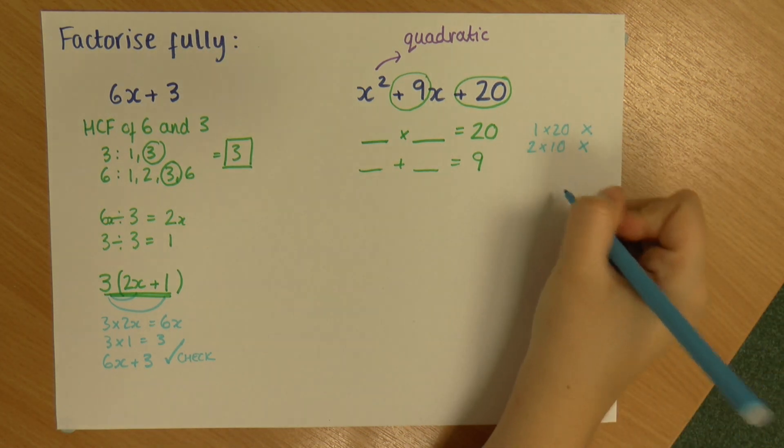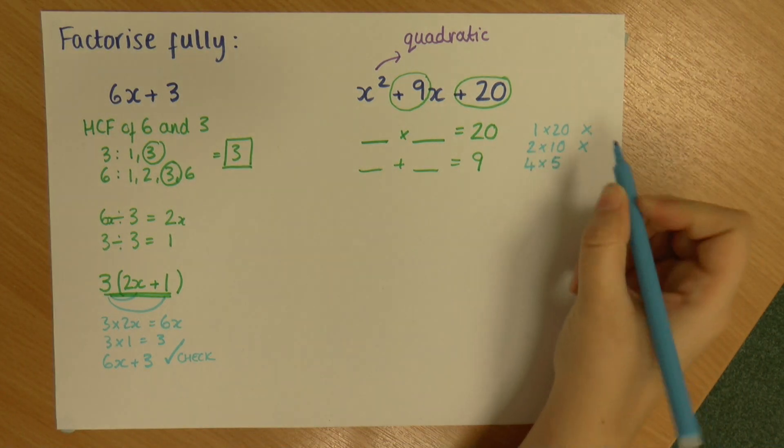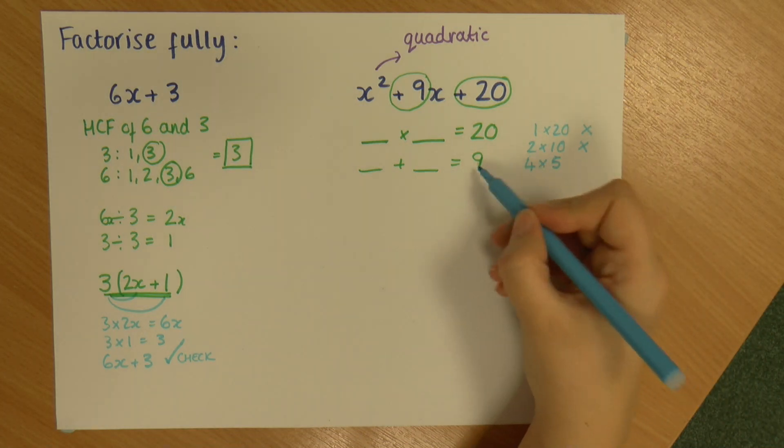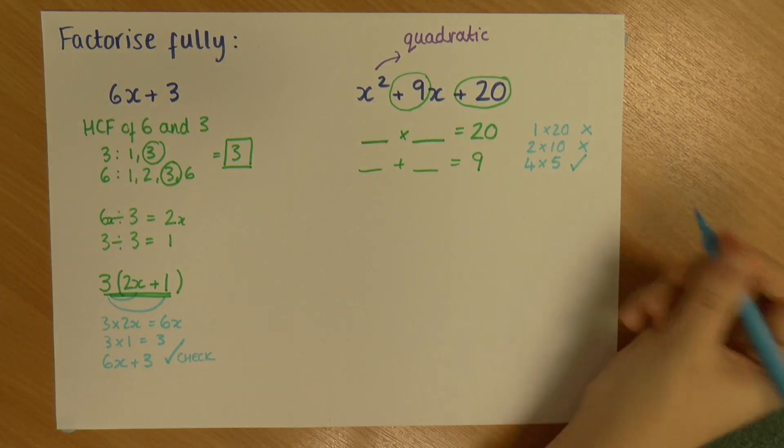Can I multiply anything by 3 to give me 20? No I can't. How about 4? So I've got 4 times 5. 4 times 5 is 20. How about 4 add 5? 4 add 5 is 9. So that's my pair.